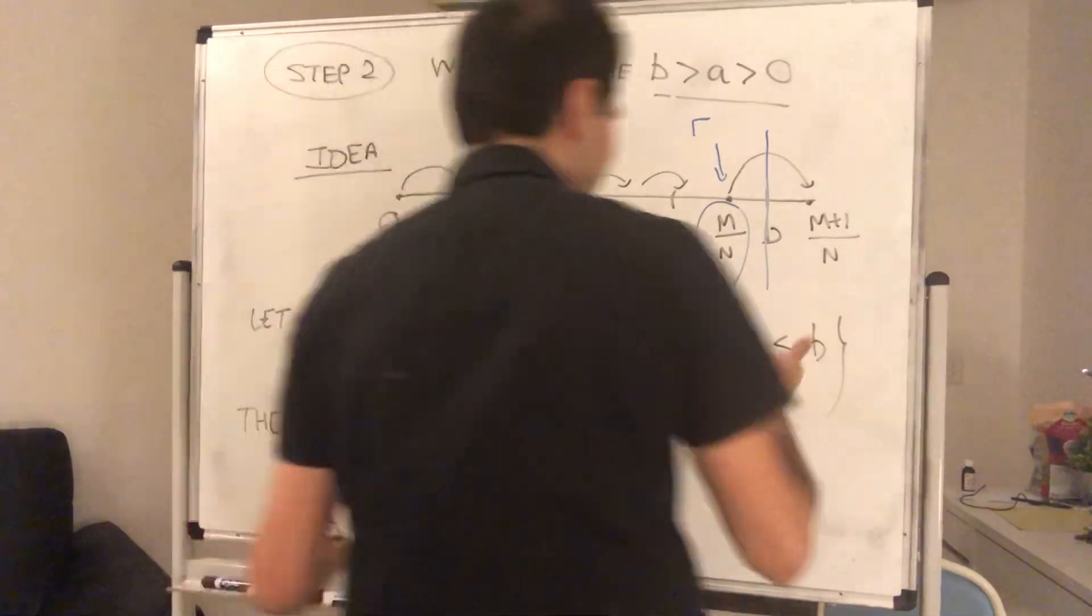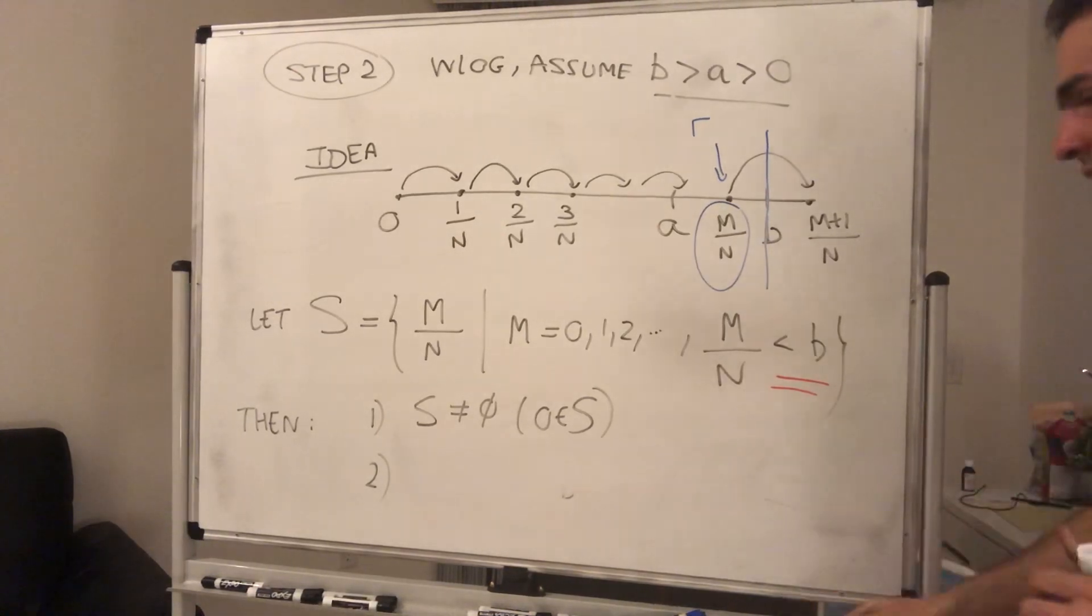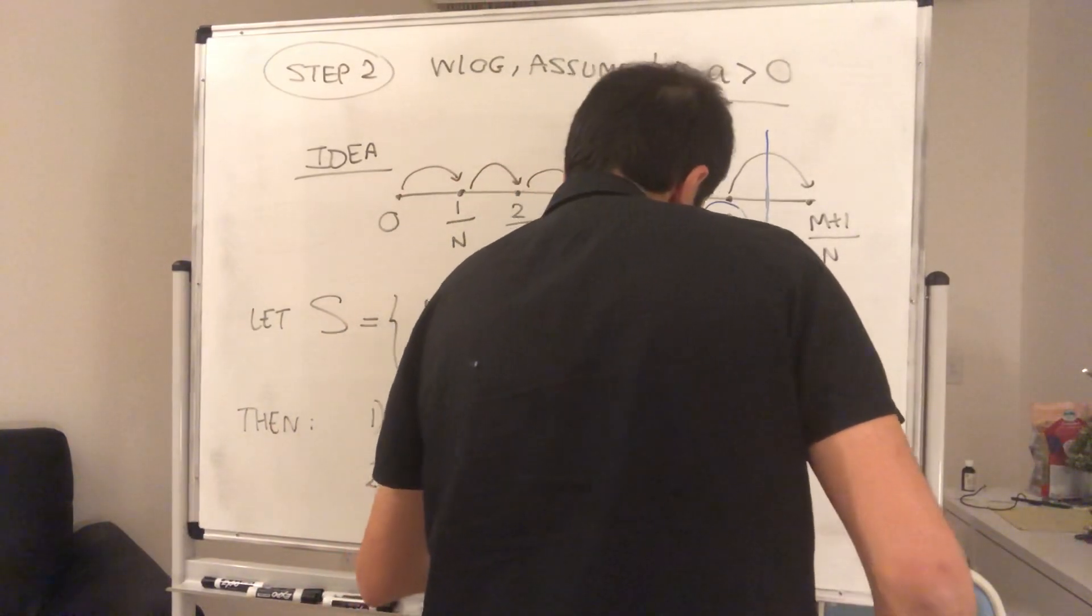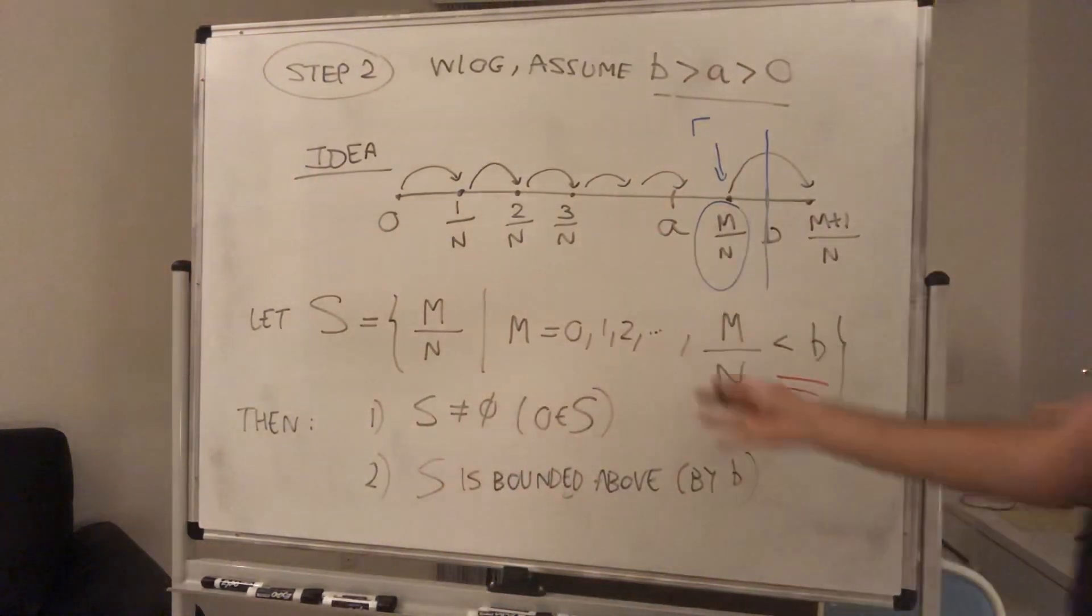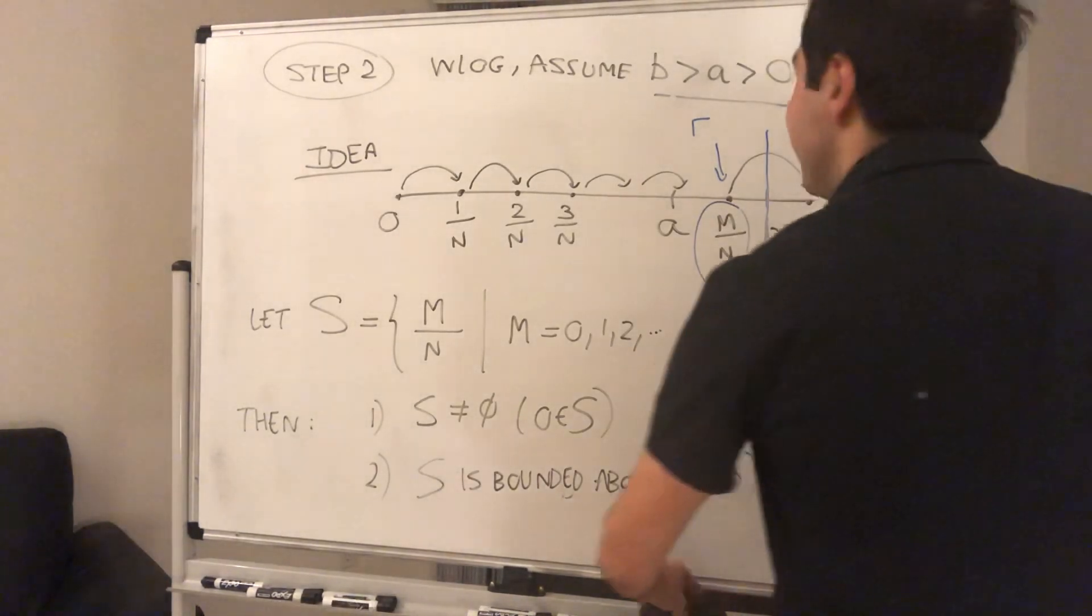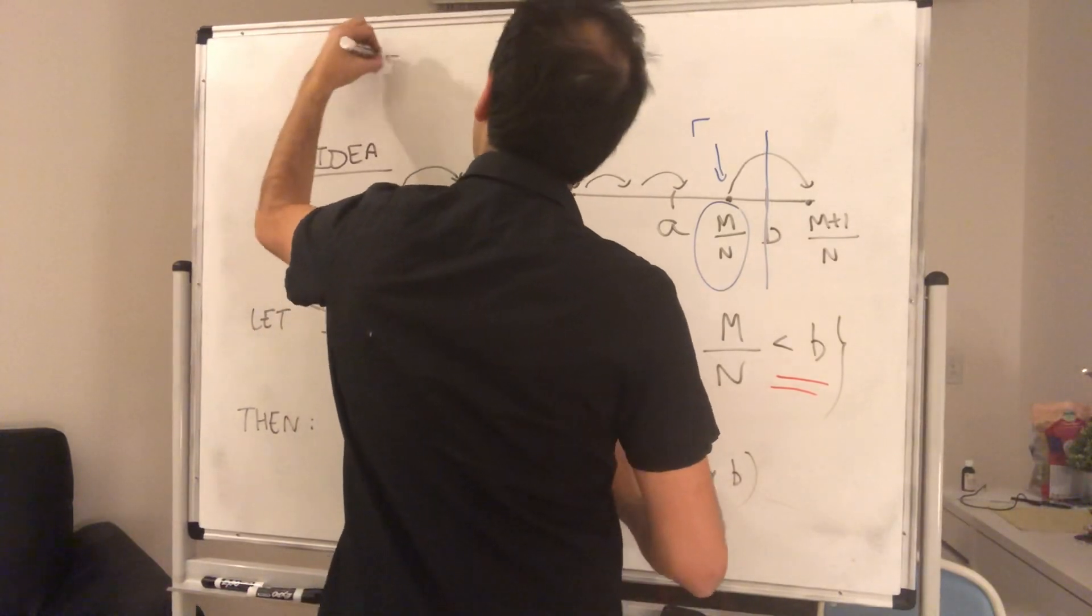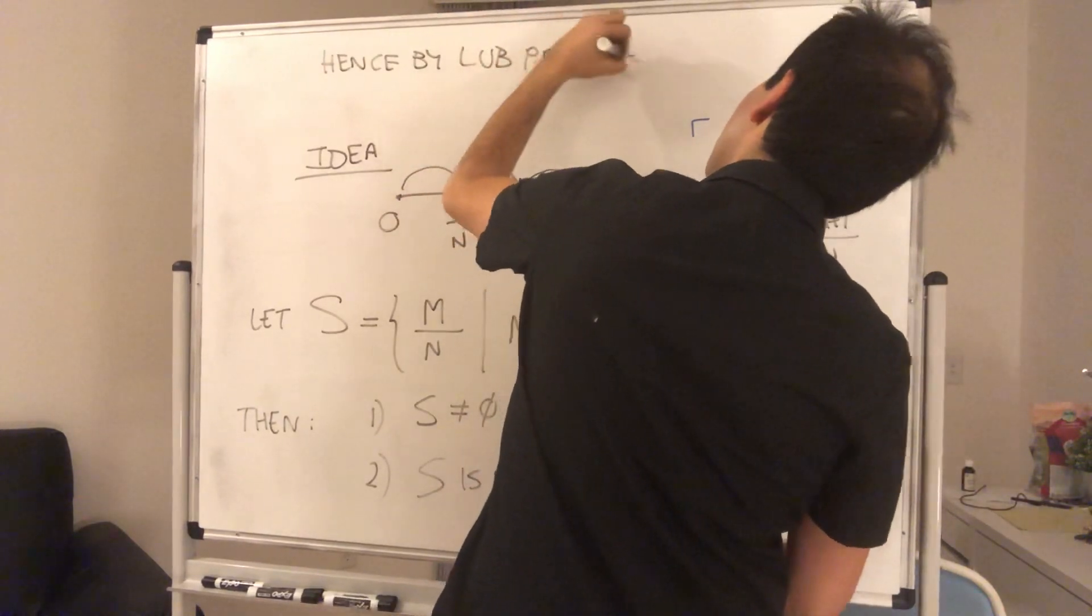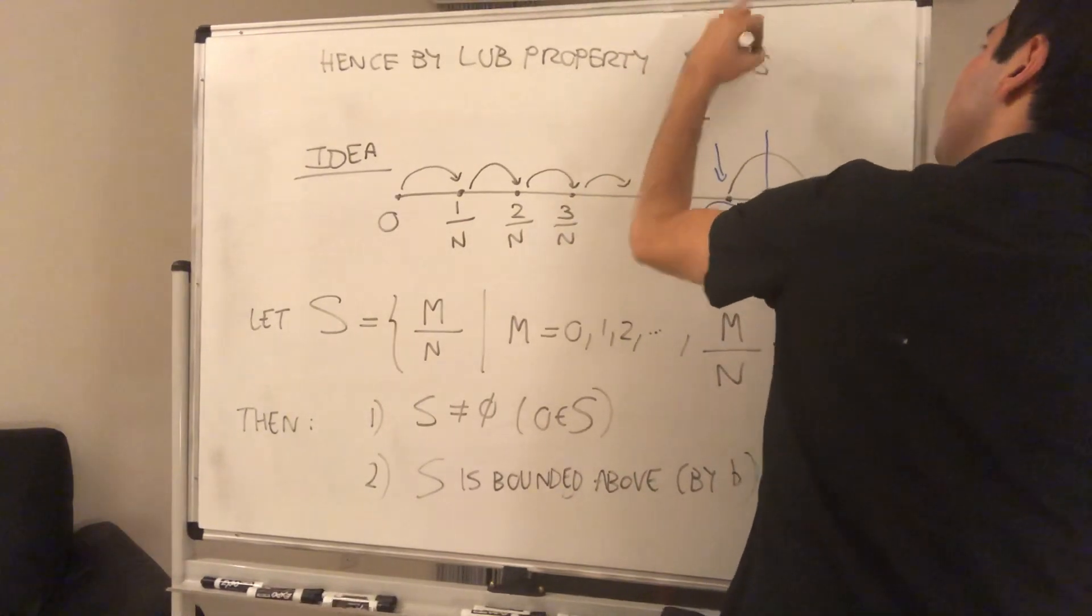And moreover, that's amazing. By construction, S is bounded above because we said it's all the fractions that are less than b. So S is bounded above by b. And because you have a non-empty set that's bounded above, the supremum exists. So S has the least upper bound. So then, hence, by the least upper bound property, r, let's call this r, or supremum of S, which is r, exists.